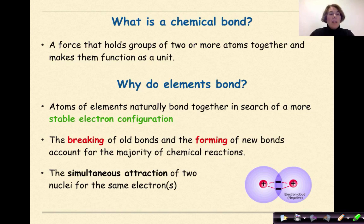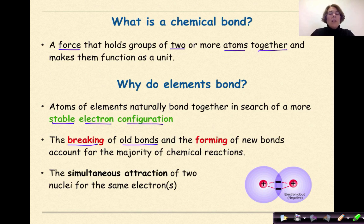A chemical bond is a force that holds groups of two or more atoms together and makes them function as a unit. Now the question is, why do elements bond? Atoms of elements naturally bond together in search of a more stable electron configuration. The breaking of old bonds and the forming of new bonds accounts for the majority of chemical reactions. Bonding is also the simultaneous attraction of two nuclei for the same electrons.